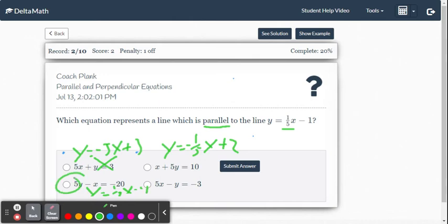And if you do the other one, you're going to end up getting negative y equals negative 5x minus 3. So it's going to be y equals 5x plus 3 when you multiply both sides by negative 1. So our answer is the bottom left one.